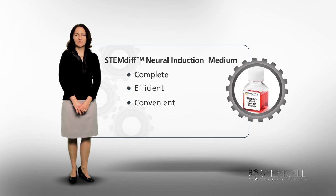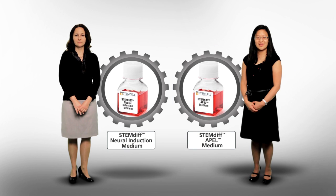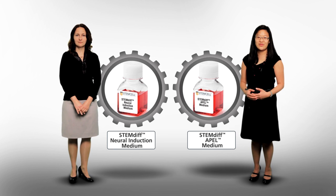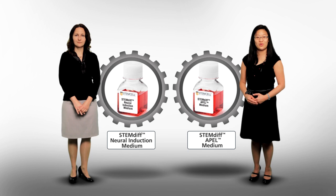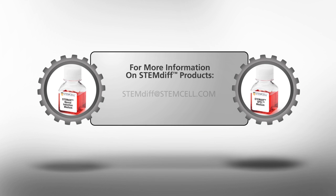Greater than 95% of neuroprogenitor cells can be obtained within 12 days, with no manual rosette isolation procedure required. If you are differentiating human pluripotent stem cells, see how the new StemDiff product line can help your research. For more information, please email us at stemdiff@stemcell.com or visit our website at stemcell.com.